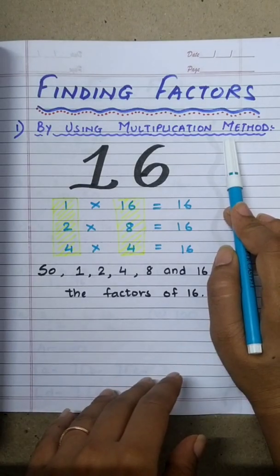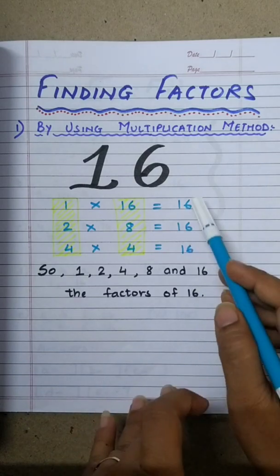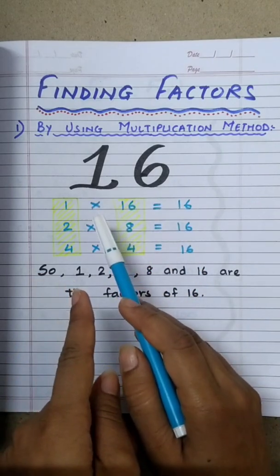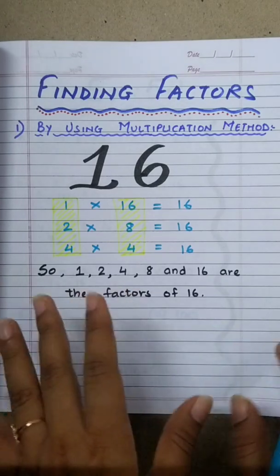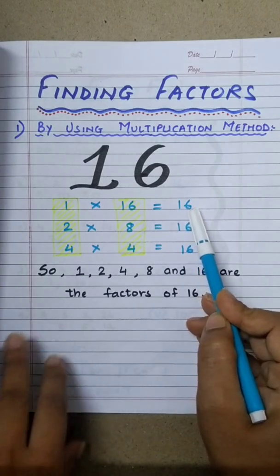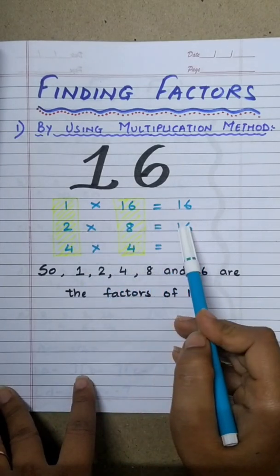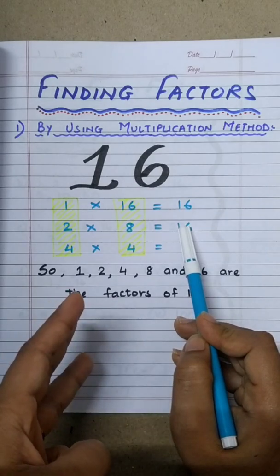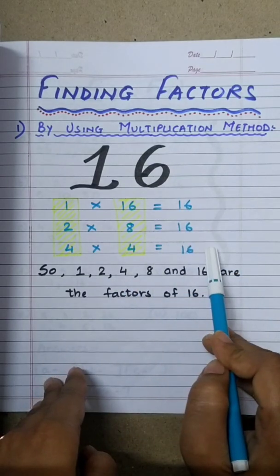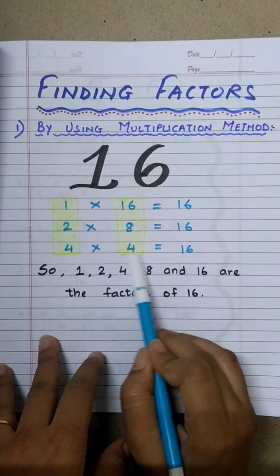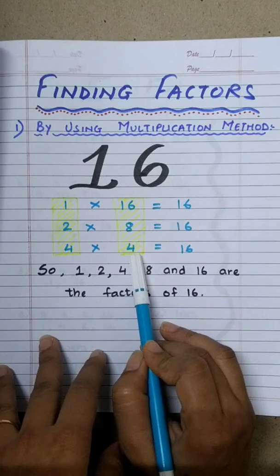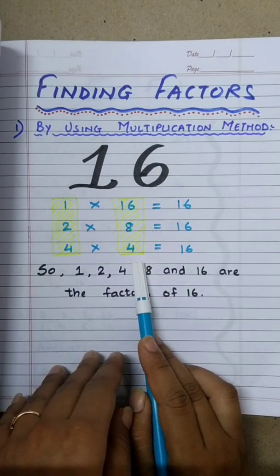This is very simple. For example, if we have to find out the factors of 16, we will start with 1. Always remember, 1 is the factor of all the numbers. So, 1 sixteen is 16. Then we go to 2 — 2 eights are 16. Then we go to 3, but 16 does not fall in the table of 3. So, we go to 4 — 4 fours are 16. Now, we can't go to 5 because number 4 is being repeated. So, here we will complete our process of finding the factors.